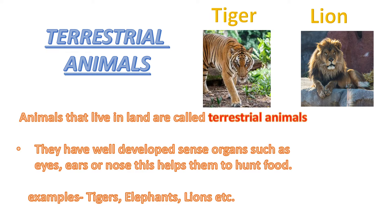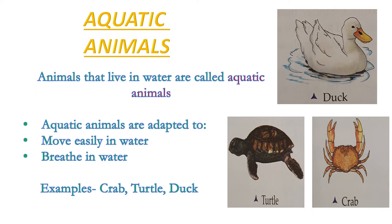What are terrestrial animals? Animals that live on land are called terrestrial animals. They have well-developed sense organs such as eyes, ears, and nose. This helps them to hunt for food. Examples: tigers, elephants, lions, etc.